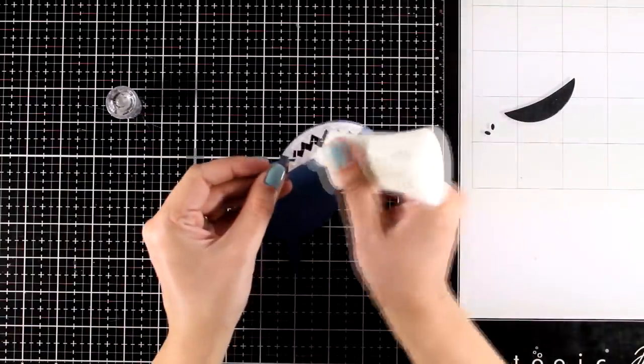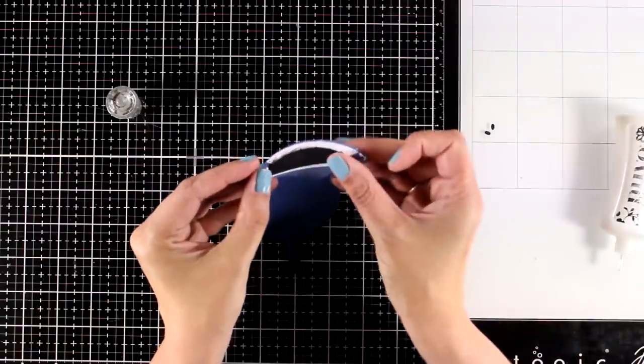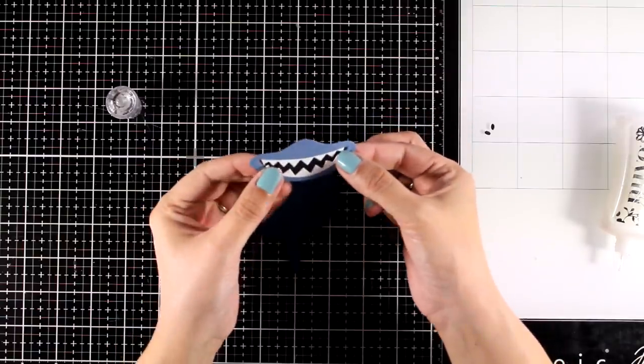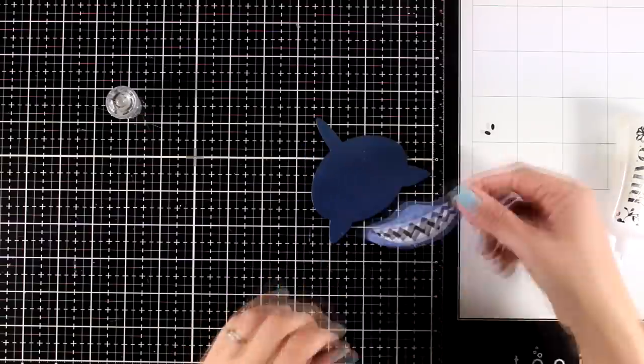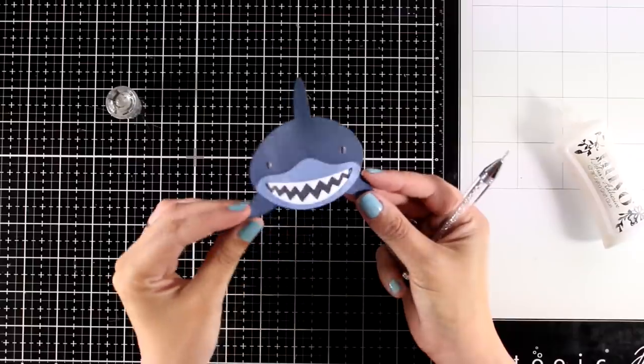So this is the black piece that I am going to stick now, which is the inside of the mouth. And of course you can go with pink or red for that if you want to. And then there are indentations exactly where you are supposed to stick this one. Also glue down the eyes and you are ready to go.